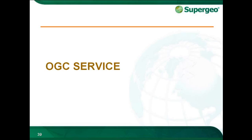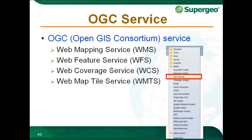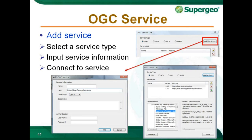OGC service: SuperGIS Desktop provides OGC service for users to get layers or image data. The OpenGIS Consortium is a voluntary, non-government, and non-profit organization devoted to developing open system geographic information. WMS, WFS, WCS, and WMTS data are provided in the OGC service of SuperGIS Desktop. To add an OGC published layer, select the service type required, input the service information like service name and URL address, enter a username and password if required, and click OK. Then double-click the service list to get the OGC service, and in the layer collection you will see all layers in this service.